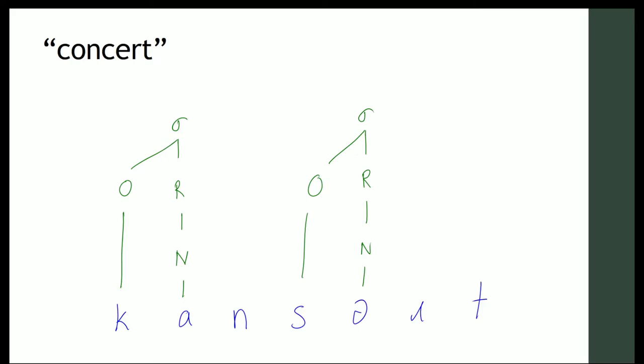Now when we have no onsets left to fill, we just dump all the consonants into the codas of the syllables to the left. So N is going to be a coda to CON and RT is going to be a coda to the second syllable. So CON-CERT, and then don't forget, we want to link these up together to the prosodic word. So this is the syllable structure for concert.